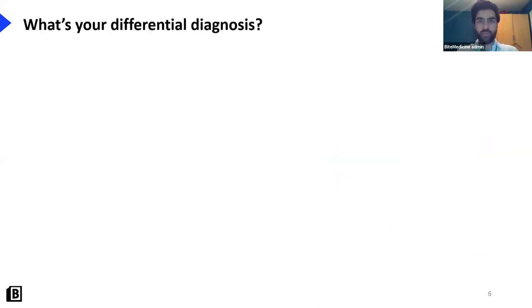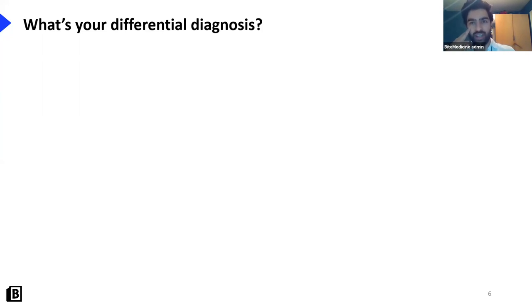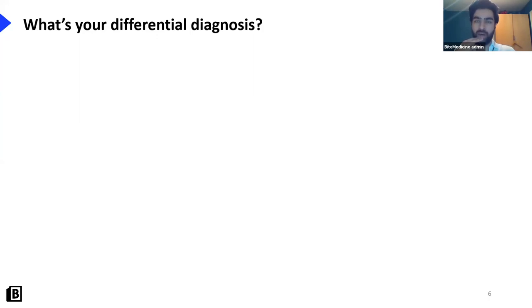In the chat, list some differentials — then we'll come on to what exactly the differentials I have listed are. Pneumothorax, PE, heart failure, MI, COPD, angina, asthma, COVID, pneumonia — very good. Bronchiolitis in children — yes, we'll be covering mainly adults here. Panic attack, kyphoscoliosis, anemia, Guillain-Barré — these are some great differentials and they're all correct.